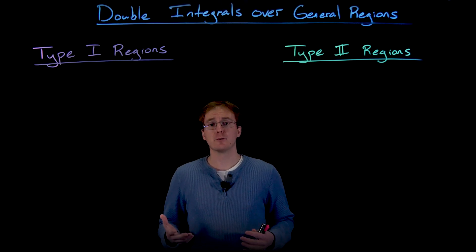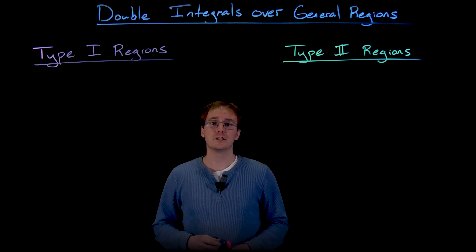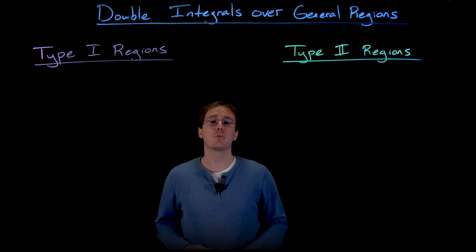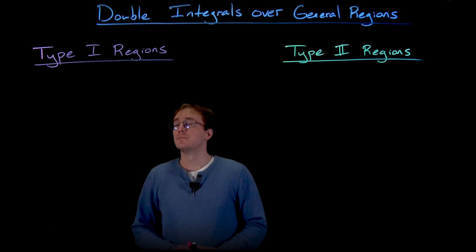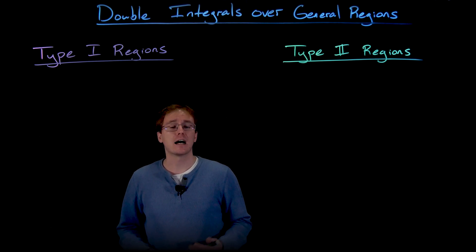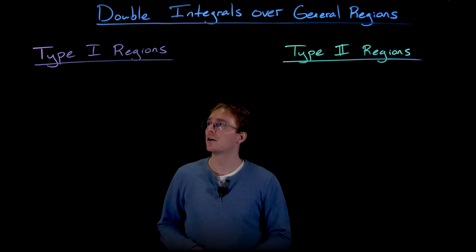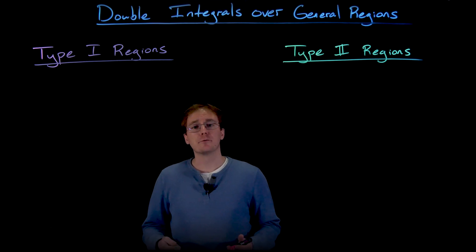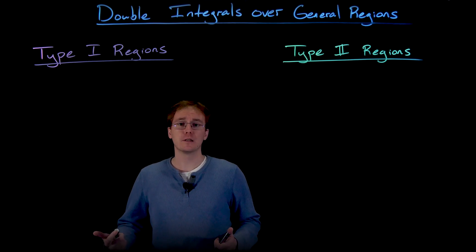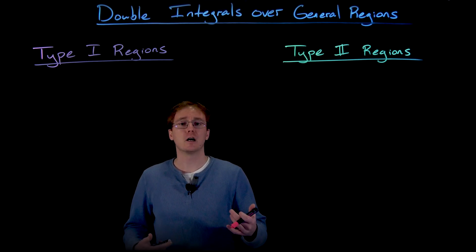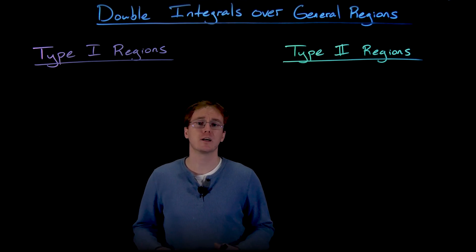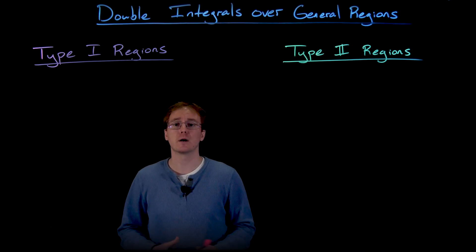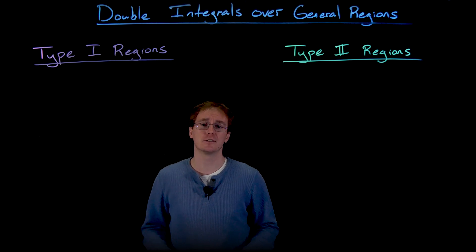When we are computing these double integrals over more general regions, it's pretty standard to describe the region as either a type 1 or a type 2 region. A type 1 region is bounded above and below by two functions of x. A type 2 region is going to be bounded to the right and to the left by two functions of y.